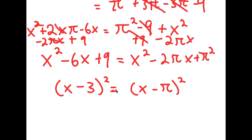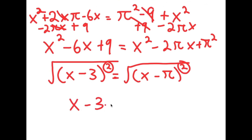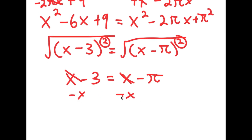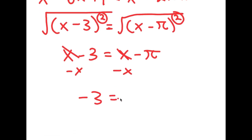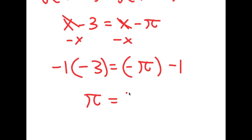So I have x minus 3 squared equals x minus pi squared. I want to cancel the squares, so I take the square root of both sides. The square root of x minus 3 squared equals x minus 3, and the square root of x minus pi squared equals x minus pi. So I get x minus 3 equals x minus pi. Subtracting x from both sides gives negative 3 equals negative pi.